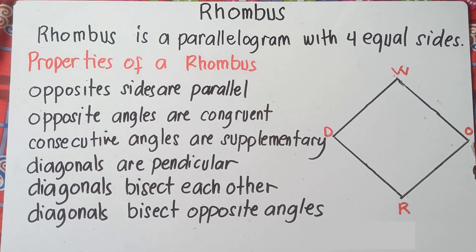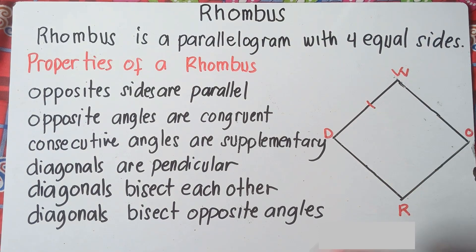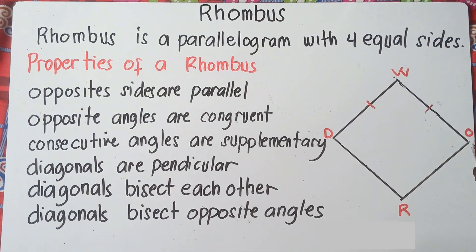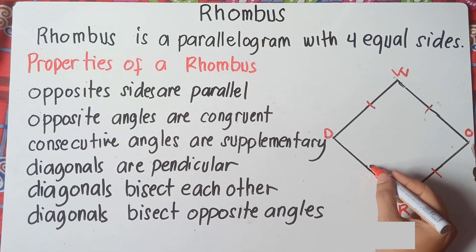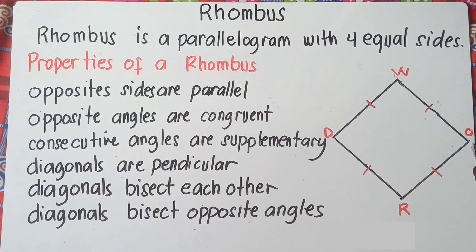So let's start with the definition of a rhombus. A rhombus has four equal sides. Therefore, side DW is equal to WO, OR, and RD — according to its definition that a rhombus has four equal sides.